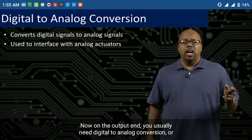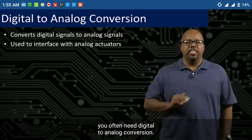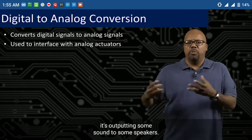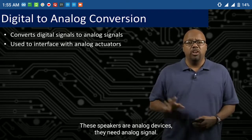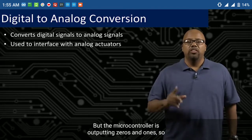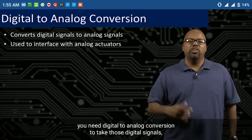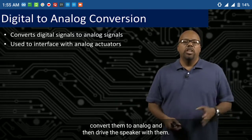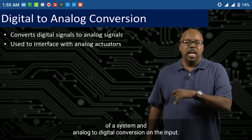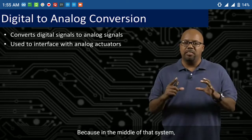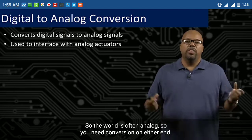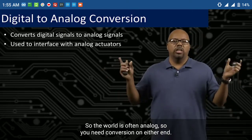On the output end, you often need digital-to-analog conversion. Say I have a microcontroller outputting sound to speakers — these speakers are analog devices; they need an analog signal. But the microcontroller is outputting zeros and ones. So you need digital-to-analog conversion to take those digital signals, convert them to analog, and then drive the speaker. It's very common to see digital-to-analog conversion on the output of a system and analog-to-digital conversion on the input, because in the middle — in that microcontroller — it's almost all digital. The world is often analog, so you need conversion on either end.